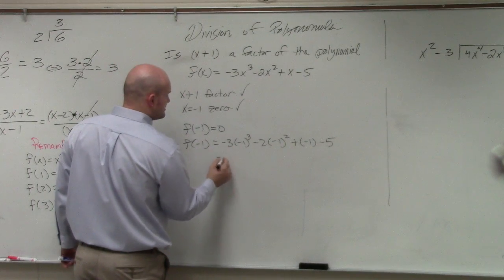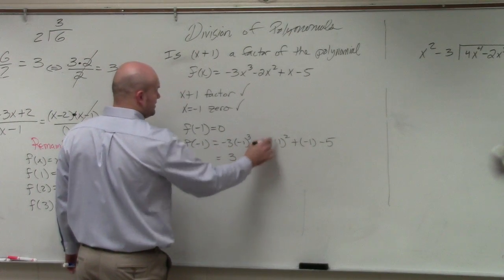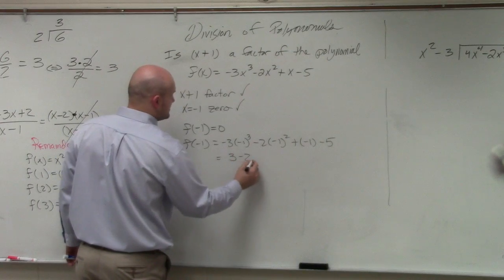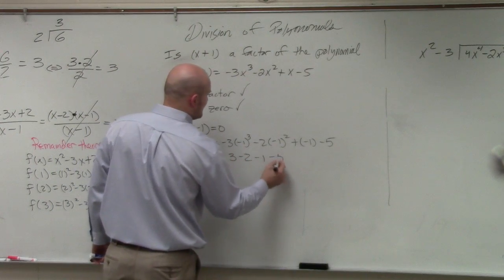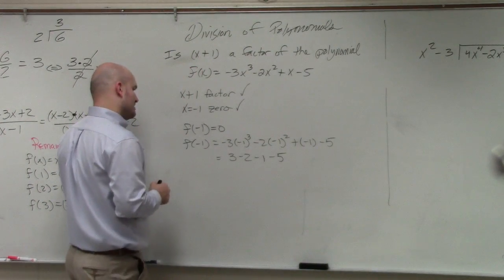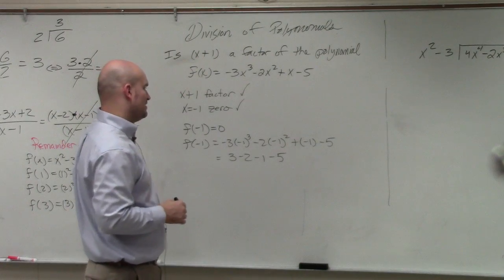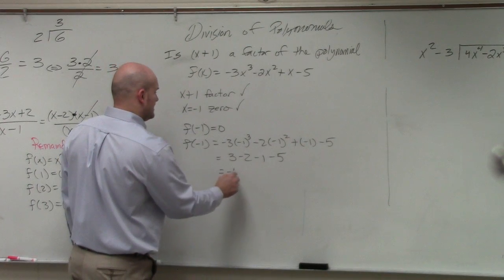Negative 1 cubed is negative 1 times negative 3 is positive 3. That's positive 1 times negative 2 minus 1 minus 5. So that becomes 3 minus 2 is 1, zero. I get negative 5.